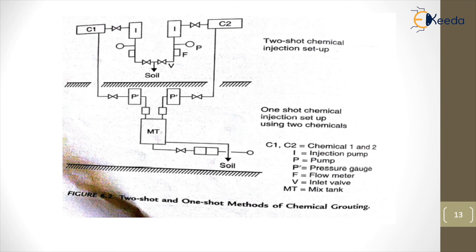In the two-shot chemical system shown in the figure, there are two chemicals that are injected one after the other into the soil. In the one-shot chemical system, the chemicals are mixed together in a mixer and then injected into the soil.